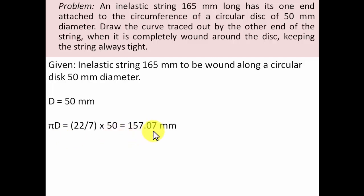The circumference works out as π×D = (22/7) × 50 = 157.07 mm. You can clearly see that this string length is 165 and the circumference is 157 approximately. Hence when you wound this string over this disc, not only will it cover the entire circumference but it will also go ahead beyond that.